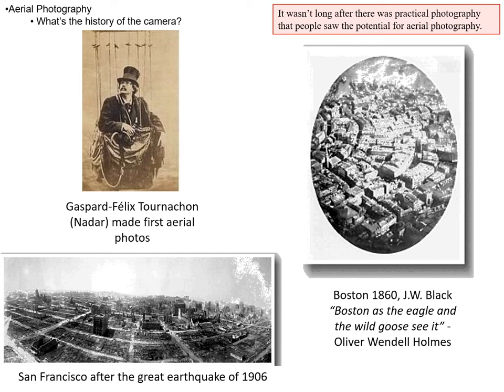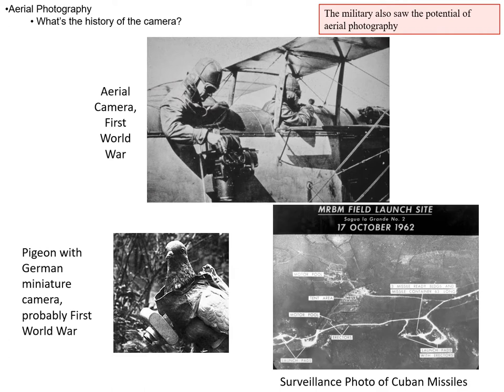But pretty soon people were taking aerial photos all around. On the bottom there is San Francisco after the great earthquake of 1906 — somebody went up in a balloon and took pictures. To the right, we have Boston in 1860, described as Boston as the eagle and wild goose see it.